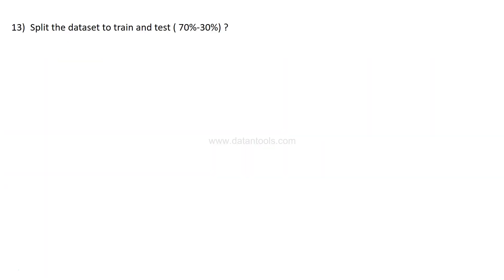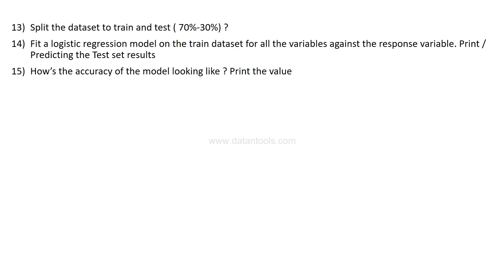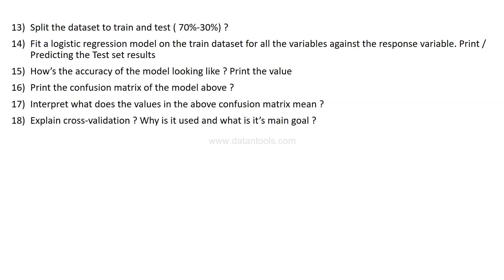The next question: split the dataset to train and test between 70-30. Fit a logistic regression model on the train dataset for all variables against the response variable and print the predicting test results. What is the accuracy of the model? Print its value. Print the confusion matrix of the model above, which helps you look at not only accuracy score but a couple of other metrics. Interpret what the values in the above confusion matrix mean.